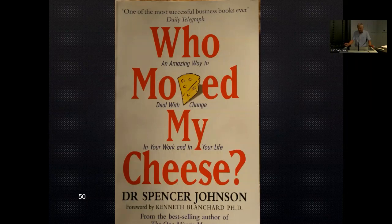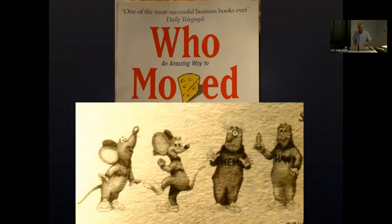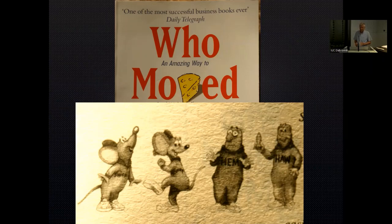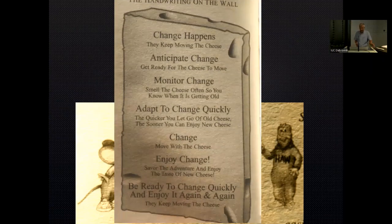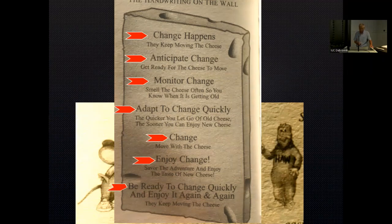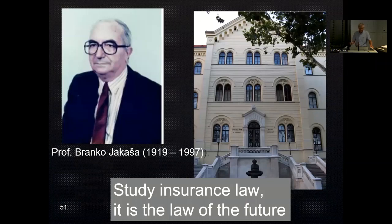This is said to be one of the most successful self-help books ever issued — a story of two little men and two mice looking for cheese. The little men always went to the same room to collect the cheese, while the mice went through the maze trying to find another source. The conclusion the mice wrote on the wall was: change happens, anticipate change, monitor change, adapt to change, enjoy the change, and be ready to change quickly and enjoy it. As the late professor used to tell us: study insurance law — it is the law of the future. Thank you.